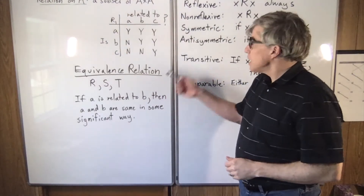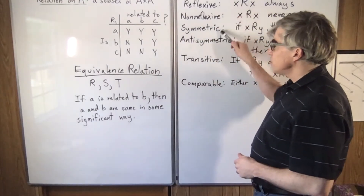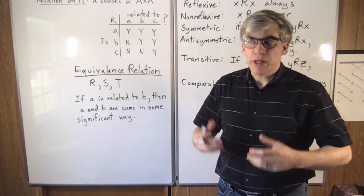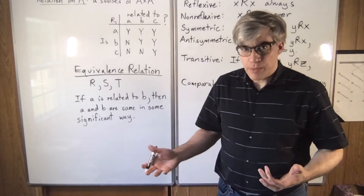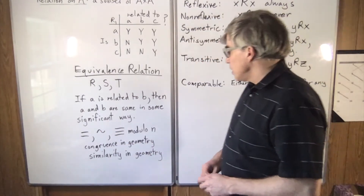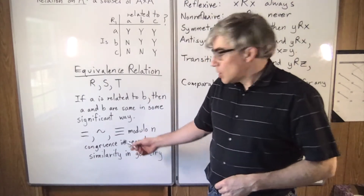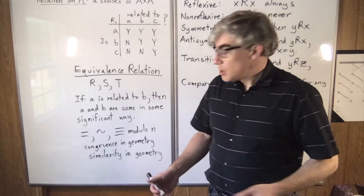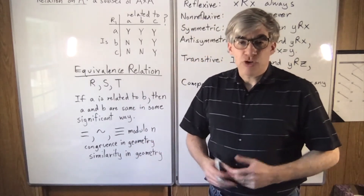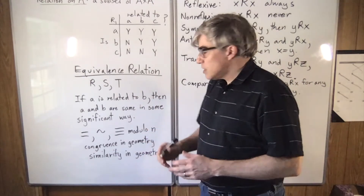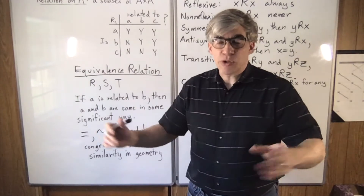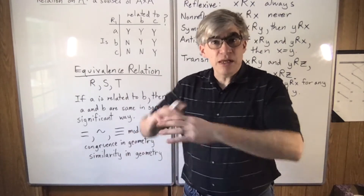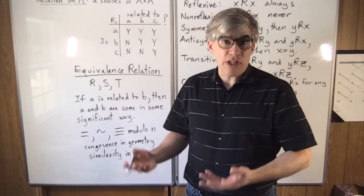An equivalence relation has three of these properties: it is reflexive, symmetric, and transitive. A is related to B means they're sort of in the same group — the same in some significant way. Equal sign is an equivalence relation. Congruence modulo n, congruence in geometry like congruent line segments or triangles, and similarity in geometry like triangles having the same shape — all of those partition all possible triangles into groups. All the ones that are the same shape but different sizes go into the same similarity equivalence class.